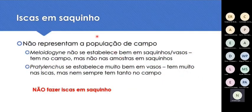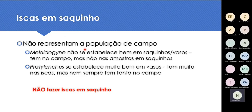O pessoal divulga bastante a ideia de coletar terra na época seca, colocar num vaso ou saquinho, plantar uma mudinha MPB e depois mandar analisar. Esse tipo de isca de saquinho ou isca em vaso não representa a população de campo. Não recomendo esse tipo de amostragem, porque ela não é verdadeira: os nematóides do gênero Meloidogyne não se estabelecem bem nos saquinhos, e Pratylenchus se estabelece tão bem que você vai achar que tem muito na área quando às vezes não tem. Essa metodologia não é correta.